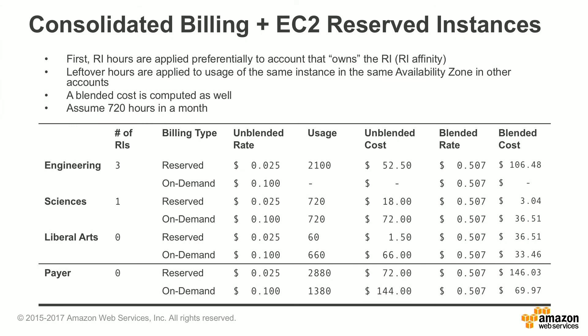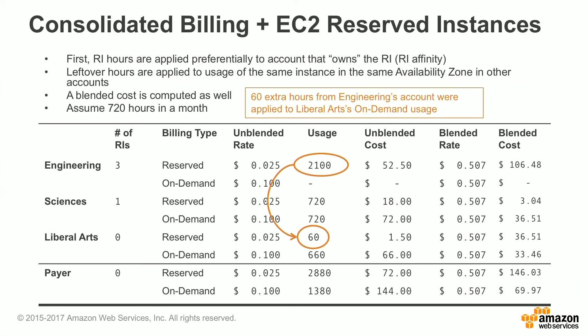Lastly, let's talk about reserved instance affinity. RI hours are applied preferentially to the account that owns the RI — meaning the account where the RI was originally purchased — and any leftover hours are applied to usage of the same instance type in the same availability zone in other accounts. A blended cost is computed assuming 720 hours in a month. For example, in this case there are 60 hours from the engineering account that were applied to the liberal arts account's on-demand usage because they were unutilized by the engineering account.